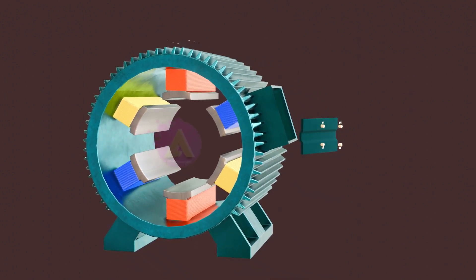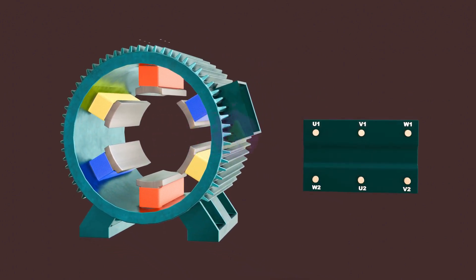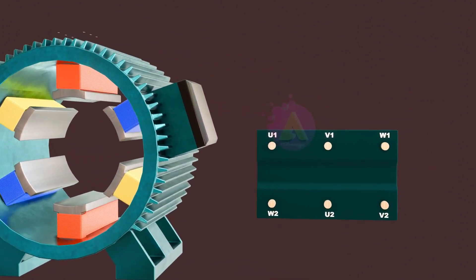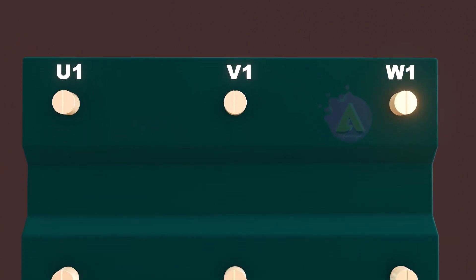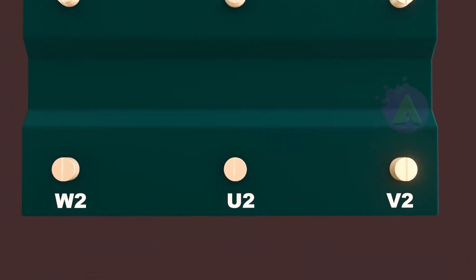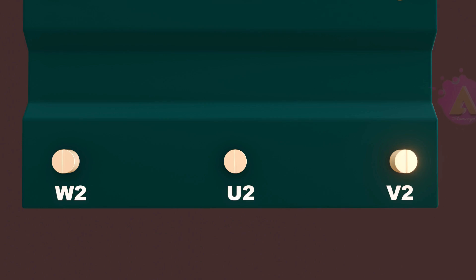Inside this box we have 6 electrical terminals. Each terminal has a corresponding letter and number. We have V1, U1, W1, and W2, U2, and V2.